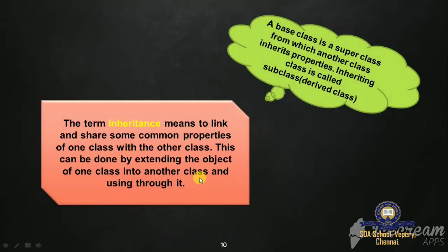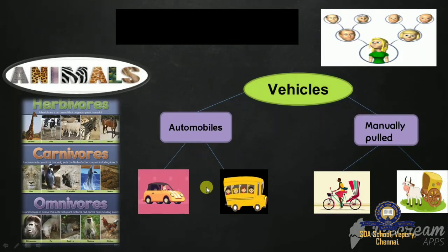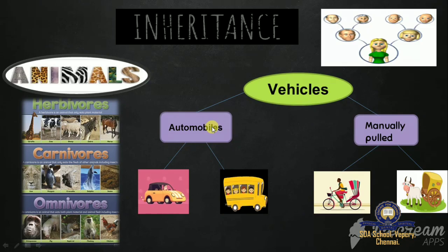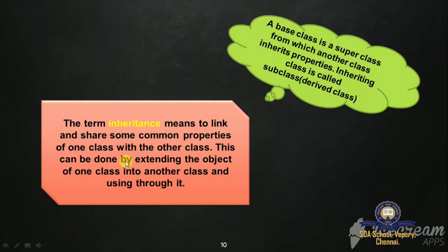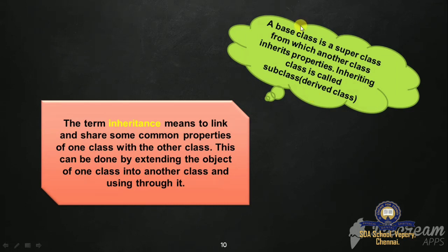Now, what is inheritance? The term inheritance means to link and share some common properties of one class with another class. This can be done by extending the object of one class into another class and using it through that. A base class is a super class or parent class from which another class inherits properties. The inheriting class is called sub class, also known as derived class or child class.